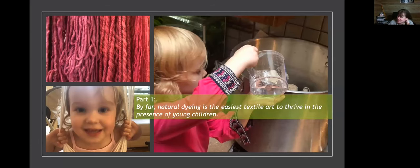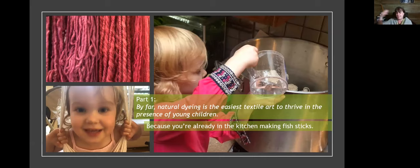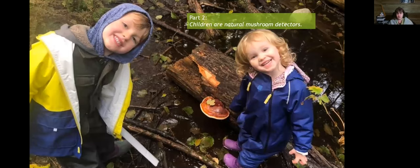Lesson four: natural dyeing is by far the easiest textile art to thrive in the presence of young children, because you're already in the kitchen anyway. If you have kids and suddenly can't sit and knit or weave in the evenings, dyeing is not one of those things — if your dye pots are on the back of the stove doing their thing, you're already there. I do more dyeing now with three little kids than I ever did before. Part two: children are natural mushroom detectors — put them to work. They're close to the ground, they love heading out, and they see more mushrooms than I do.